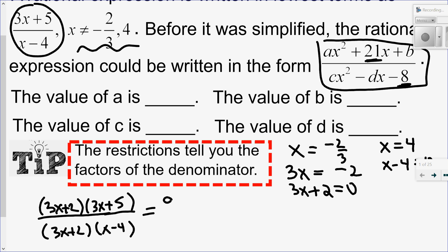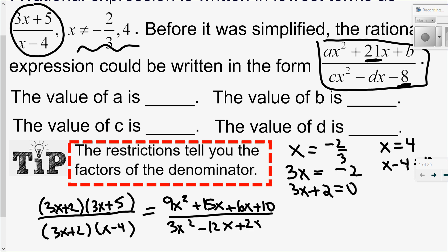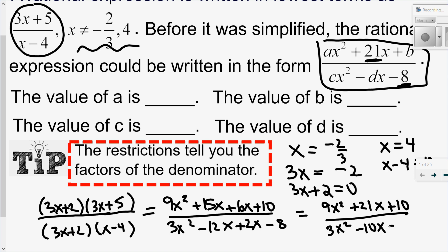Let's expand: 3x times 3x, 3x times 5, 2 times 3x, 2 times 5, and in the denominator: 3x times x, 3x times negative 4, 2 times x, and 2 times negative 4. Grouping like terms: I'm going to have 9x squared, 15x and 6x is 21x, plus 10, over 3x squared. Negative 12x and 2x is negative 10x, minus 8.